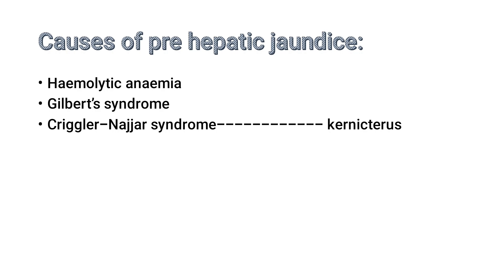Crigler-Najjar syndrome is an autosomal recessive condition in which there is a total absence of UGT. After birth, the baby cannot convert unconjugated bilirubin into conjugated form, and may die. Kernicterus can result — this term refers to irreversible damage to the brain caused by bilirubin accumulating within the brain. When this accumulation occurs, the brain is totally damaged, making Crigler-Najjar syndrome a fatal condition.